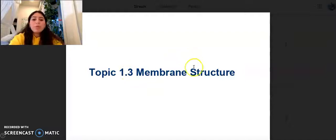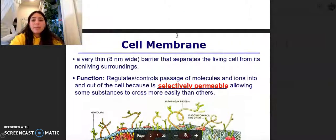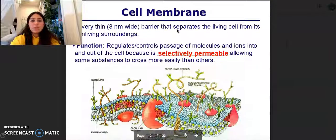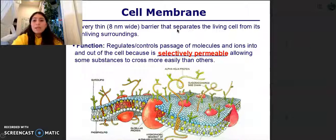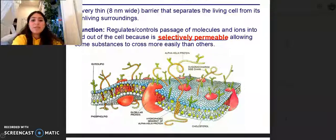Hey guys, welcome back to topic 1.3 on membrane structure. So let's get going. The cell membrane is a very thin, 8 nanometer wide barrier that separates the living cell from its non-living surroundings. Its function is that it regulates and controls the passage of molecules and ions in and out of the cell because it is selectively permeable, allowing some substances to cross more easily than others.